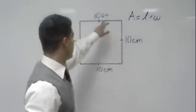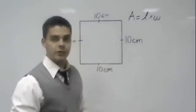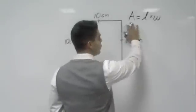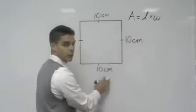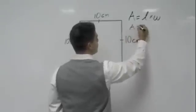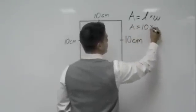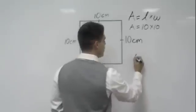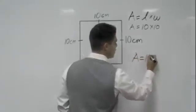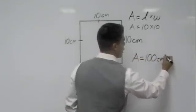What makes up a square? Four equal sides. So how do we find the area? We know it's length times width, and in this case we can say length times width or 10 times 10, and 10 times 10 should give us 100. Therefore, the area is 100 centimeters squared.